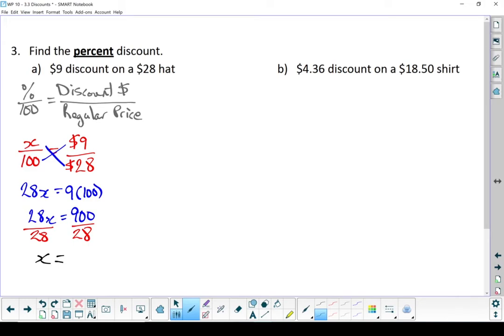Divide both sides by 28, and we're left with X equals 32.1%. It's a 32.1% off sale. Not a bad sale.